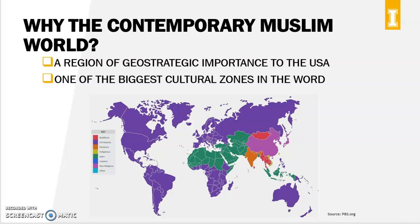The third reason is simply the confusion about the region in the United States and the Western world — there are a lot of misunderstandings and assumptions made about the region. So we knew that from geostrategic reasons, reasons of confusion, and just size and scope, that the University of Idaho needed to have a class on the contemporary Muslim world. But how to define it was the question.